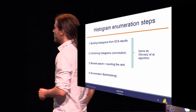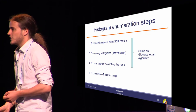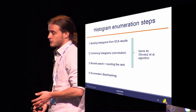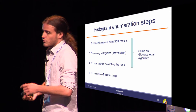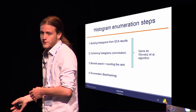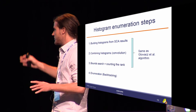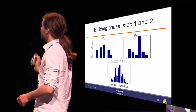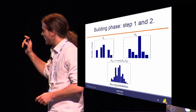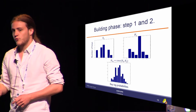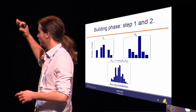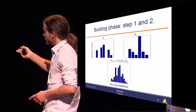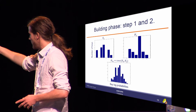The first two steps of our algorithm are the same as for rank estimation: build histograms from the probability lists, then combine them with histogram convolution. Then I do a bound search — finding where to begin and end the enumeration, essentially counting the rank. Then the actual enumeration uses a backtracking technique. I'll explain with a simple example of two sub-keys with four bits each. The first phase builds histograms with 16 elements for each four-bit sub-key, then the second phase performs convolution between the two histograms to get h01.